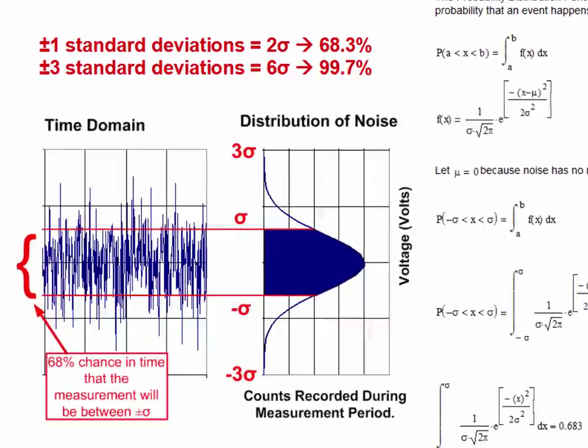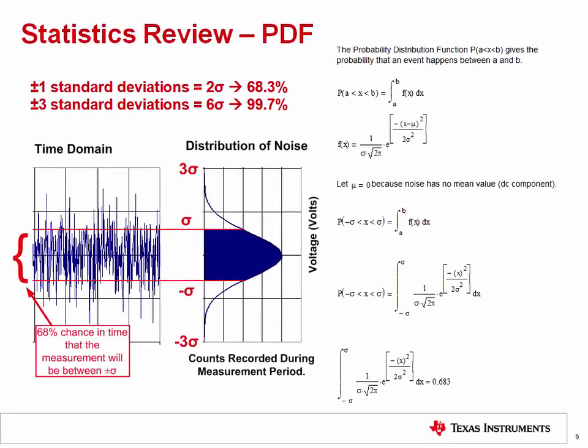The probability distribution function indicates that there is a 68% chance that a peak will occur between plus or minus 1 standard deviation or 2 sigma. For plus or minus 3 standard deviations or 6 sigma, the probability increases to 99.7%. This is often used as an estimate of peak-to-peak noise. Keep in mind, however, that the tails of the Gaussian curve are infinite, so there is always a finite probability that noise can be measured outside of the interval of plus or minus 3 sigma.